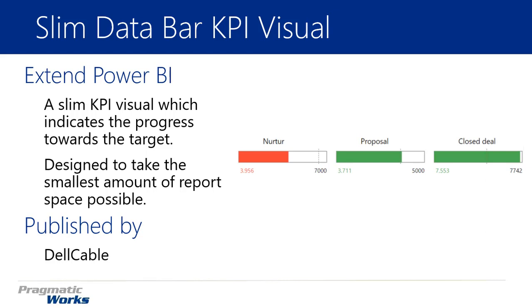It shows a KPI value to indicate how close you are to a target value, so you need an actual target and ideally a maximum value to display so you can control how large the indicator appears. It's pretty straightforward — this one's designed by Dell Cable.